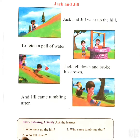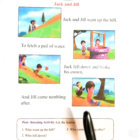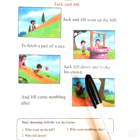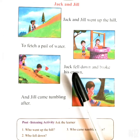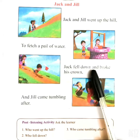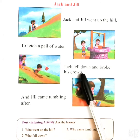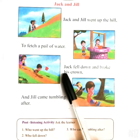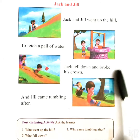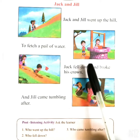Now, the second question is: who fell down? Yes, students. We read in the poem that Jack fell down and broke his crown. So, the answer will be: Jack fell down and broke his crown.